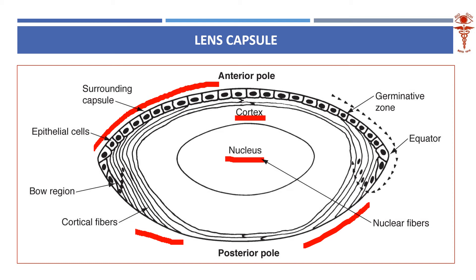The posterior capsule is very unique — it has almost no epithelium, is very thin, and separates the vitreous cavity from the anterior segment of the eye. There are two important points about the posterior capsule: first, it is the most important structure we try to preserve in cataract surgery for placing the intraocular lens over it — the posterior capsule acts as a hammock of support for the IOL. Second, the point just in front of the posterior capsule is called the nodal point.